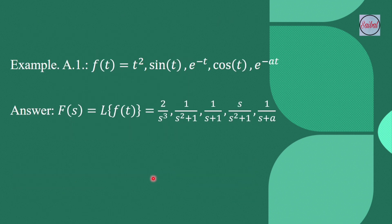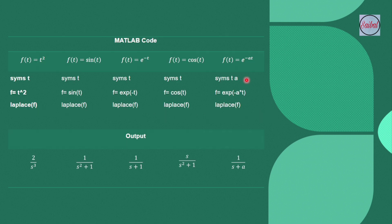These are the basic functions we commonly use, and we can remember the formulas of the Laplace transforms: f(t) = t² gives 2/s³, sin t, e^(-t), cos t, and e^(-at). We directly use these functions in MATLAB and try to find the Laplace using the command. Starting with these basic functions, here you can see the MATLAB code that we will simulate in the MATLAB environment.